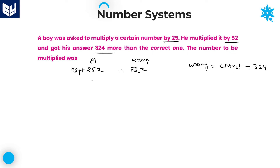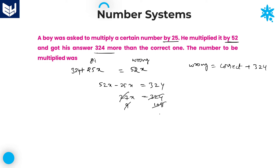Substituting into the relation: 52x minus 25x equals 324. Subtracting gives 27x = 324. Cancelling with 3: this gives 9 times, and 108 divided by 9 gives x = 12. The question asks for the number to be multiplied, which is x = 12. That is the required answer.